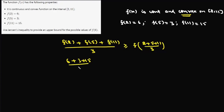Substituting: [6 + 3 + 15] / 3 ≥ f(18/3), which gives 24/3 ≥ f(6), so 8 ≥ f(6). Therefore the upper bound of the possible value of f(6) is 8.